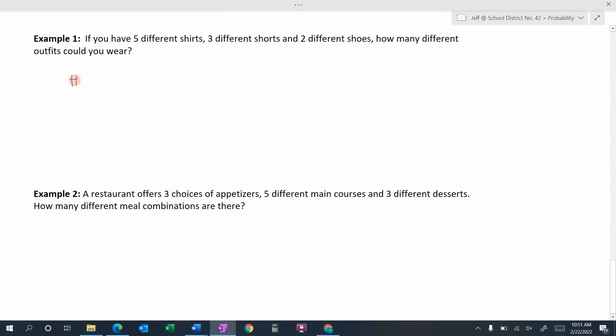Well, the number of outfits. We had five different shirts here and there was three different shorts and there was two different shoes. So we're going to just multiply these together. Five times three would be 15. Fifteen times two would be 30. So there would be 30 different outfits. That would be the sample space. There'd be 30 different combinations of shirts, shorts, and shoes that you could wear.